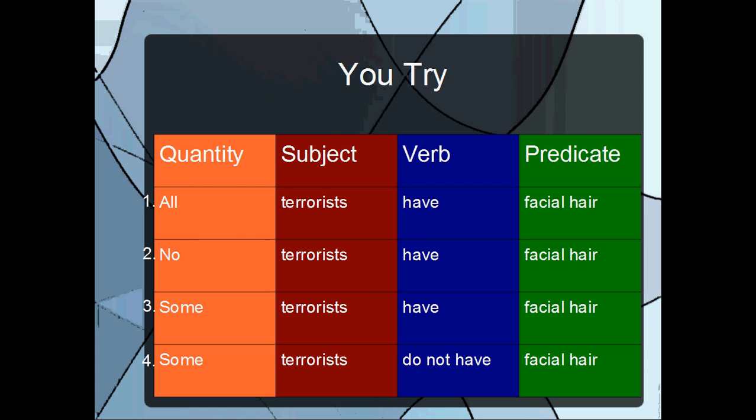For the third proposition, it's saying some terrorists have facial hair. It's saying there's at least one terrorist which falls under the category of facial hair. For the last proposition, it's saying there's at least one terrorist which does not have facial hair. It's saying terrorists are partially excluded from the category who have facial hair.